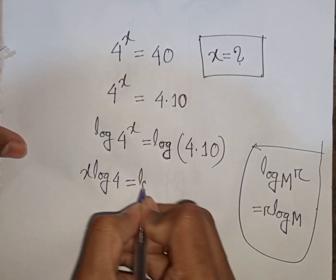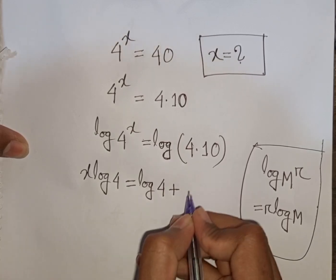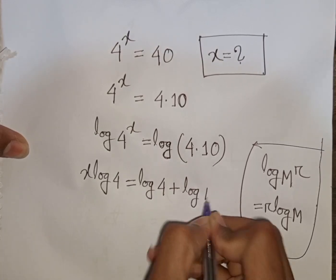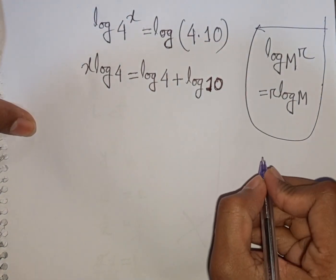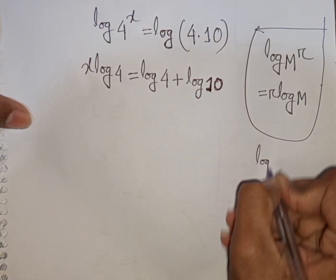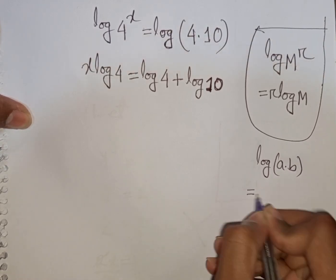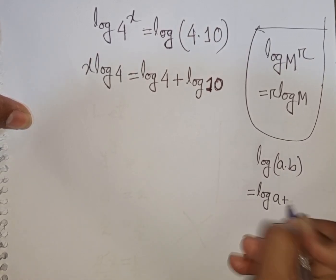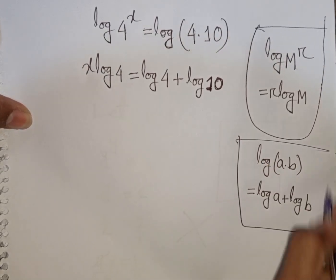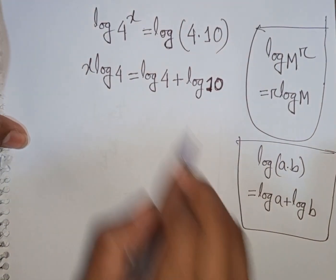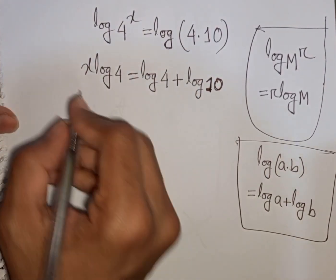That means it will be log 4 plus log 10, according to the formula log of a times b is equal to log a plus log b. So this formula is applied here: log of 4 times 10 becomes log 4 plus log 10.